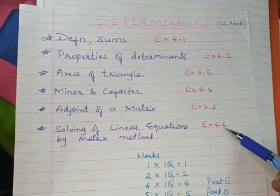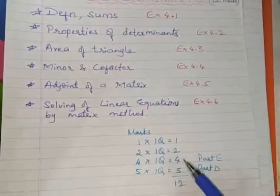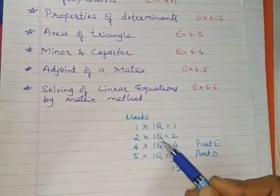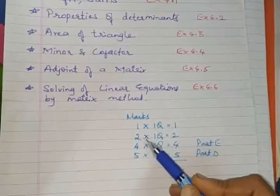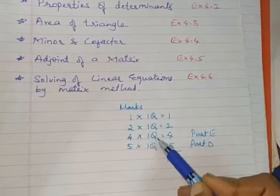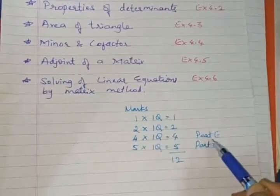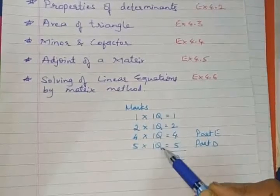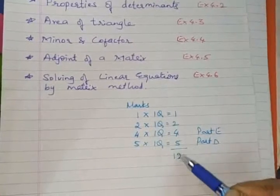For 6 exercises plus the miscellaneous exercise you need to solve. Now the marks allotted according to the blueprint of NCERT levels: 1 mark 1 question, 2 marks 1 question, 4 marks 1 question, it is taken from part E. Then 5 marks 1 question, this is section D. So total allotted we have 12 marks.